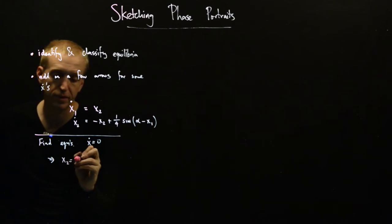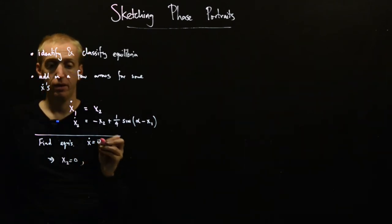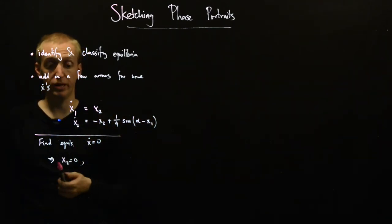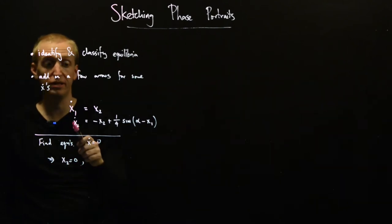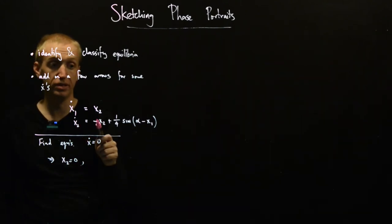So x2 is equal to zero, and now we look at our second equation and see what we can learn from there. Well, if x2 dot is equal to zero, and x2 is equal to zero.